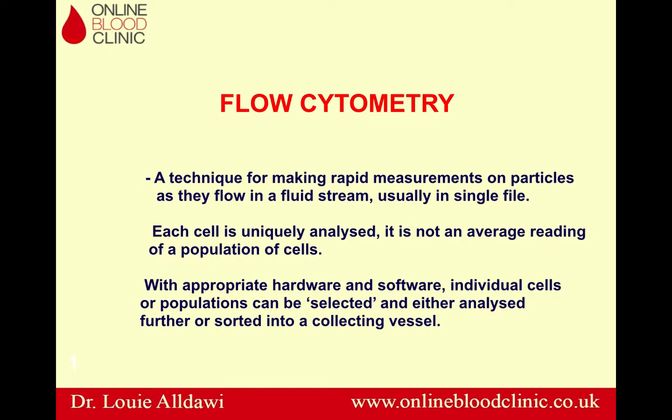Each cell is uniquely analyzed — it's not an average reading of a population of cells. In general, flow cytometry can perform a differential of 10,000 cells in one second. If you want to do a manual differential of 100 cells, it will take three to four minutes. So it's much quicker and much more accurate with appropriate hardware and software.